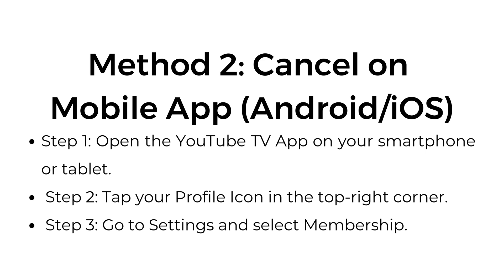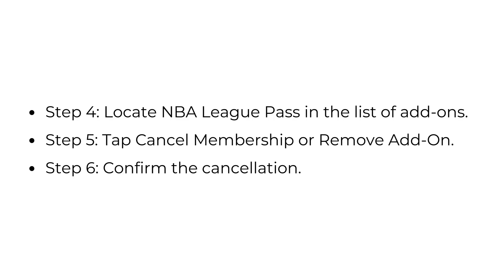Method number two: cancel on mobile app, Android or iOS. Step number one: open the YouTube TV app on your smartphone or tablet. Step number two: tap your profile icon in the top right corner. Step number three: go to Settings and select Membership. Step number four: locate NBA League Pass in the list of add-ons.